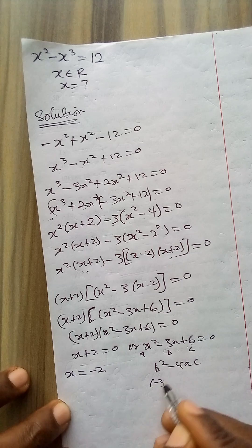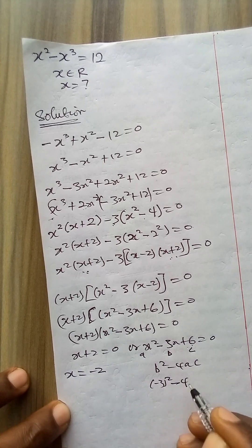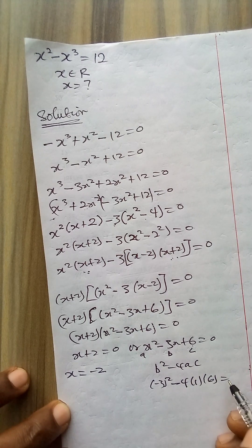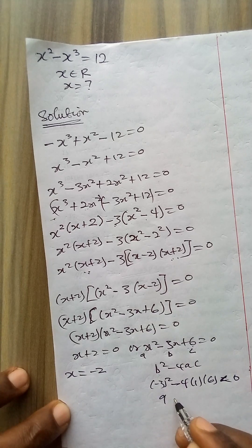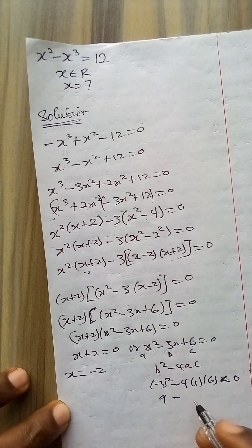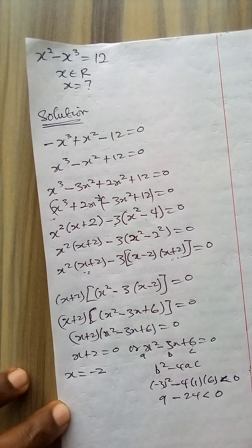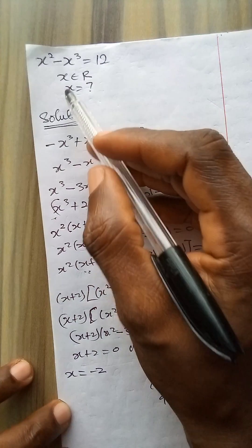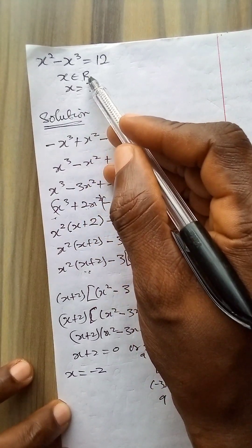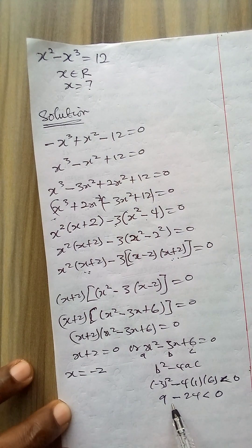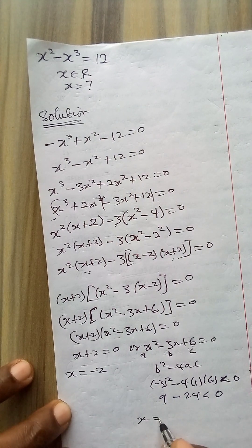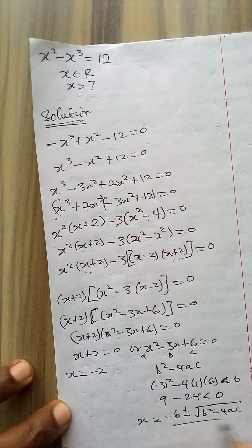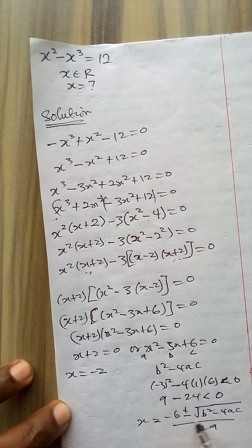Now b squared is minus 3 squared minus 4 times 1, because a is 1, and then c is 6. You see it is less than 0 because this is 9 minus 4 times 6 is 24. So I have this is less than 0. We cannot factorize this. Let's remember that the question says that x is a member of the set of real numbers. If I should apply the formula method which is x equals minus b plus or minus square root of (b squared minus 4ac) over 2a, I'm going to have a complex number.